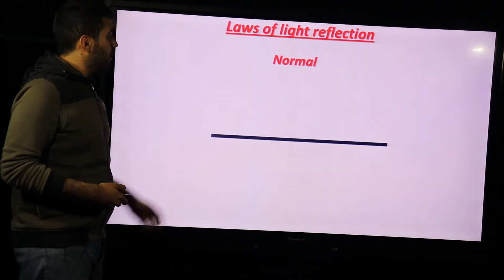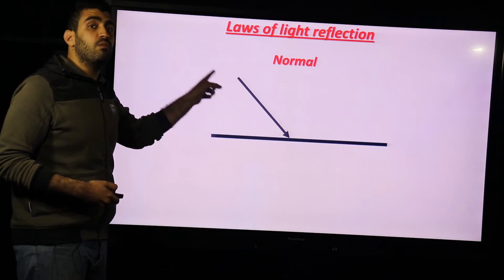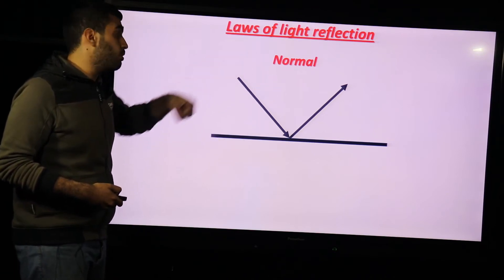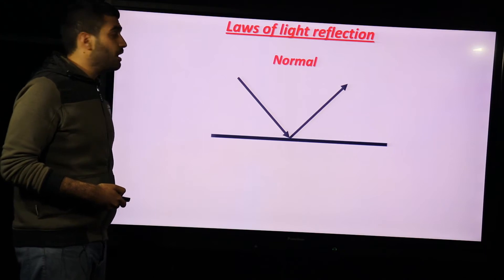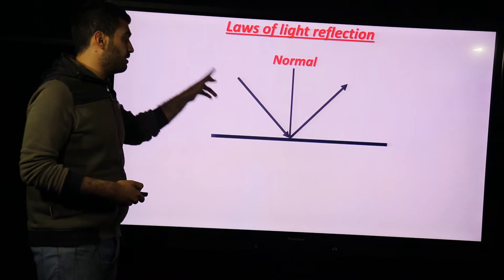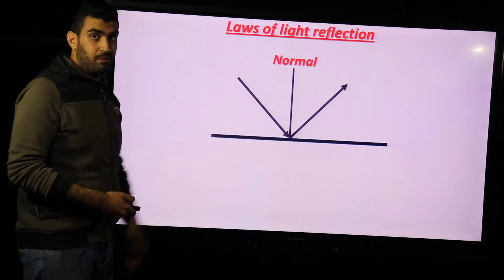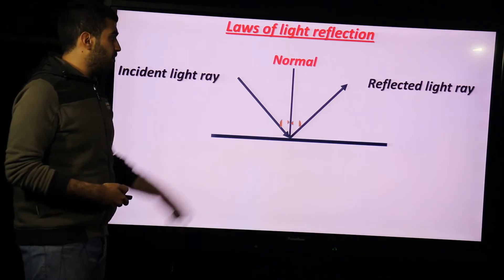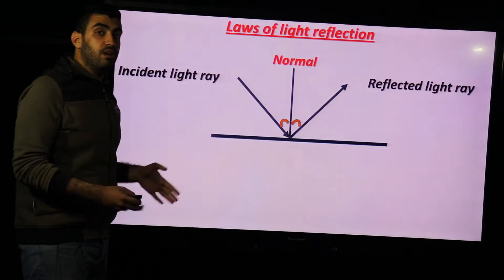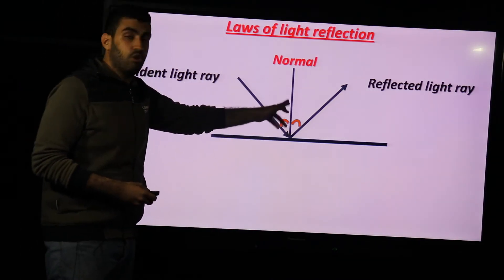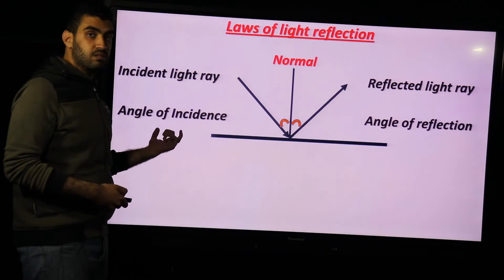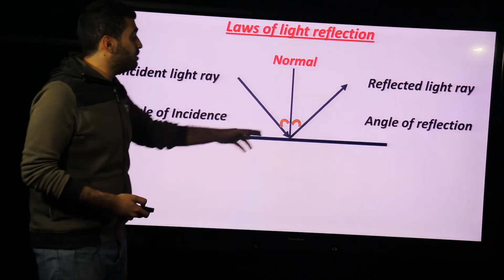To study light reflection we have two laws. First, the light ray falling on the mirror is called the incident light ray, and the one produced from the mirror is called the reflected light ray. There is also a separating line called the normal ray. The angle between the incident light ray and the normal is called the angle of incidence, and the angle between the reflected light ray and the normal is called the angle of reflection.